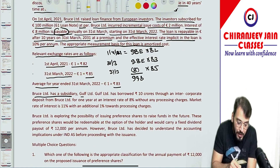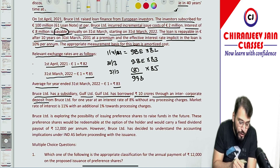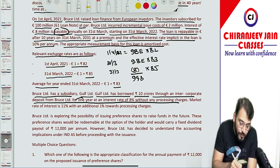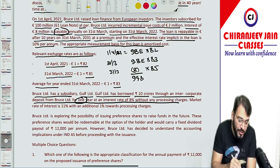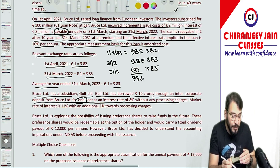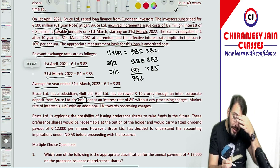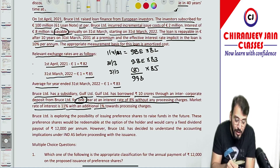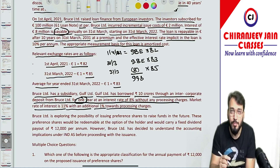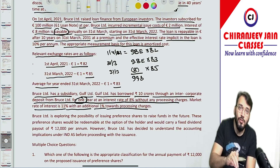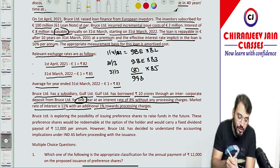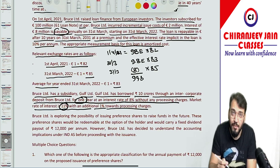Bruce Ltd has a subsidiary. Gulf Ltd has borrowed 10 crore through an inter-corporate deposit from Bruce Ltd for 1 year at an interest rate of 8% without any processing charges. However, the market rate of interest is 11% with an additional 1% toward processing charges. With processing charges the market rate is 12%; without processing charges it is 11%. Because the loan was given without any processing charges, we will consider 11% only.